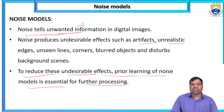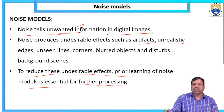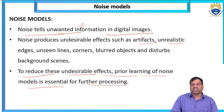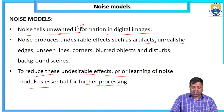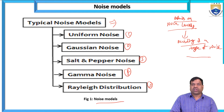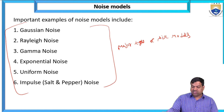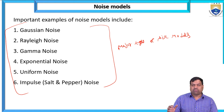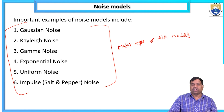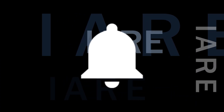Noise models include unwanted information, artifacts, unrealistic edges, unseen lines, corners, blurring, and background disturbances. Typical noise models are uniform noise, Gaussian noise, salt and pepper noise, gamma noise, and Rayleigh distribution noise. Major examples include Gaussian, Rayleigh, gamma, exponential, uniform, and impulse (salt and pepper) noise. Depending on the type of noise, we use the appropriate filter to remove it — that is image restoration. Thank you, like, share and subscribe, and hit the bell icon for more updates.